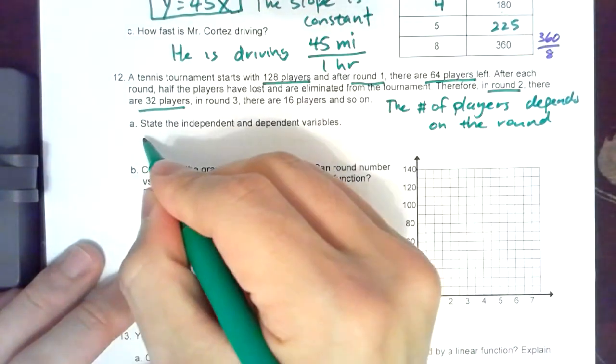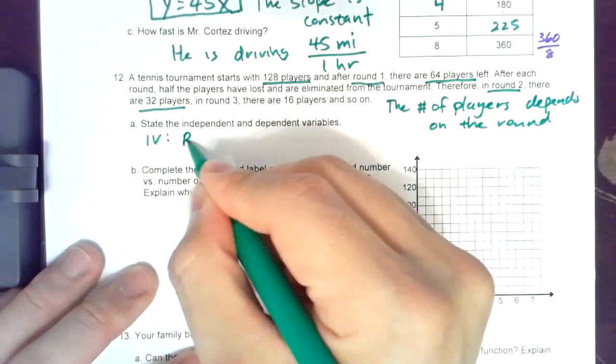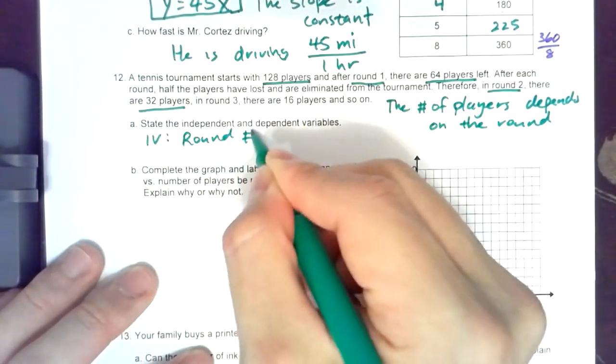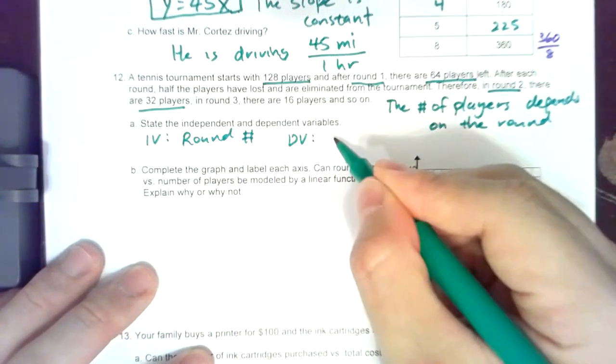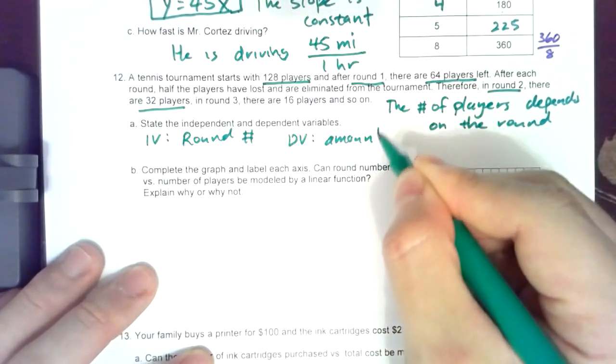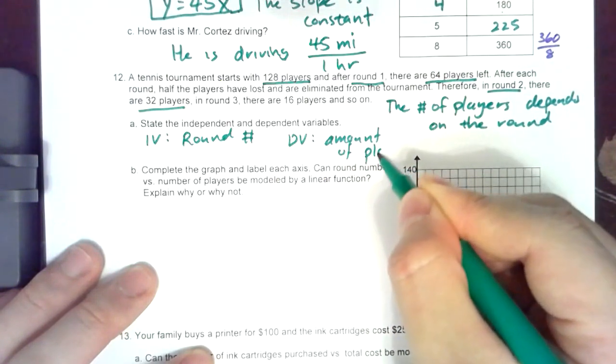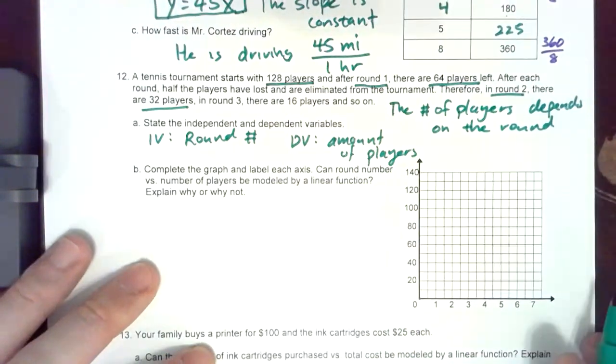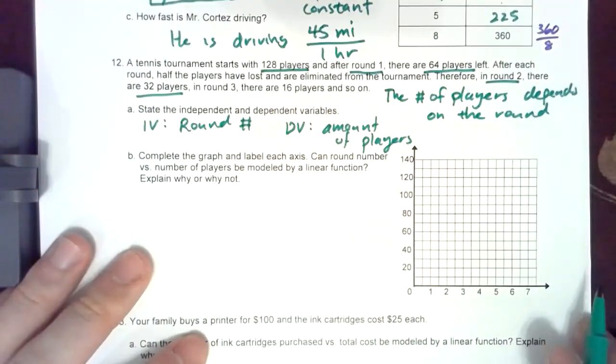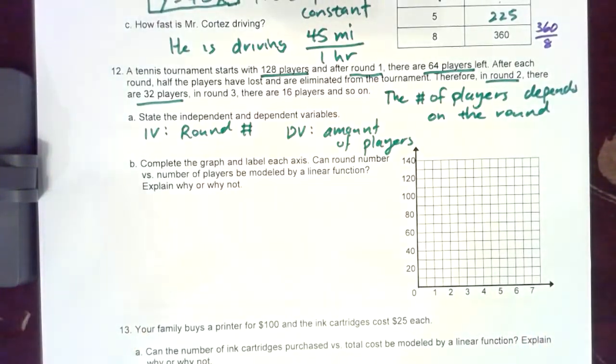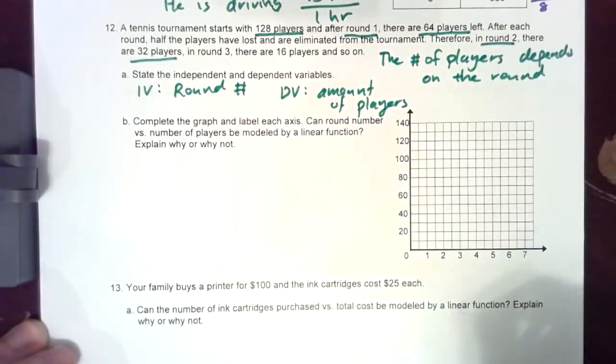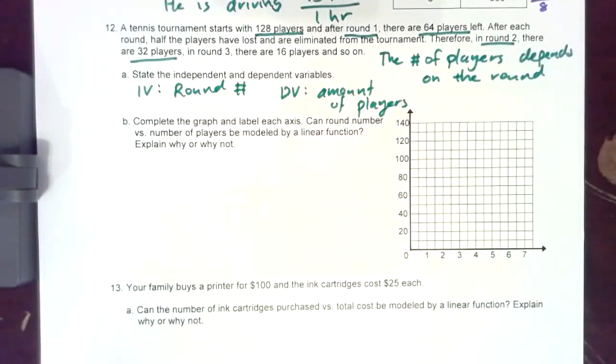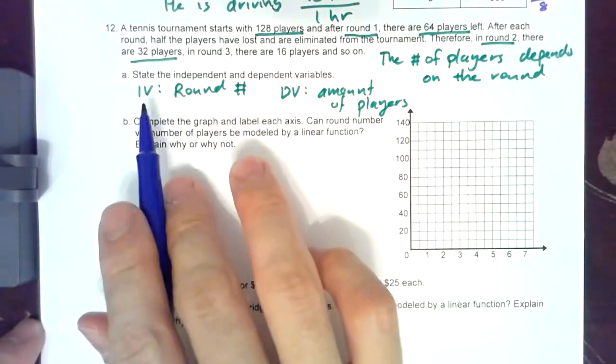So the independent variable would be the round number, the dependent variable is the amount of players. So one thing I will say is every time that you see a graph you want to make sure that you label your axes. A lot of students forget to do that, it's really really important.